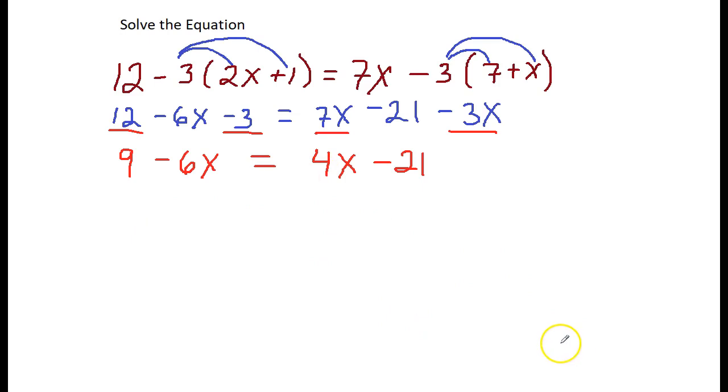Now the next thing I want to do, since each side of the equal sign is simplified, is to move everything with an x to one side of the equal sign and everything without an x to the other side. I will do this by additions and subtractions.